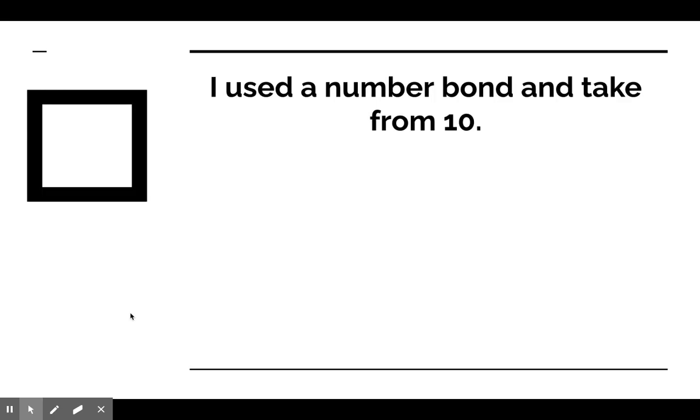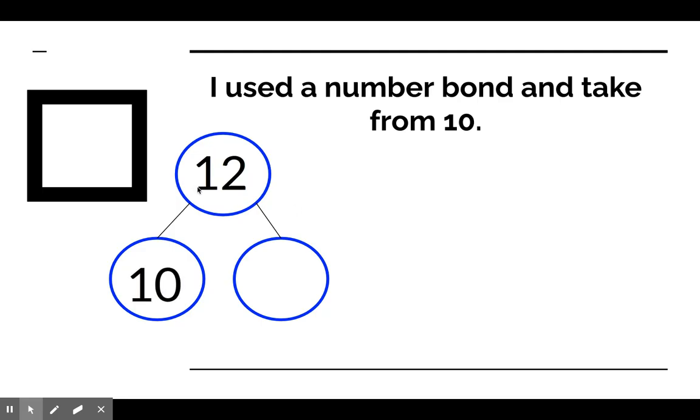I used a number bond and take from 10. Let's look at this one. We know that Jacob had 12 bouncy balls. That's how many he had total. Well, we know we can split 12 into its place value parts, which would be 10, this 1 representing 1 ten, and 2, this 2 representing 2 ones. Together, 10 and 2 are the parts that can make 12.